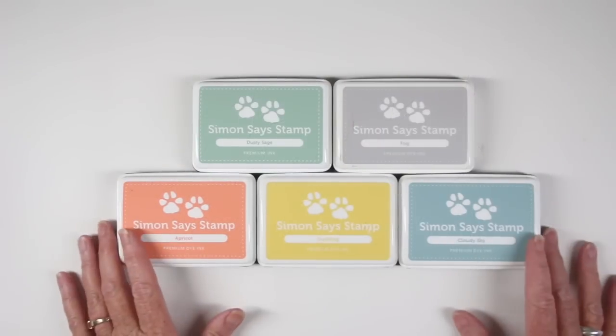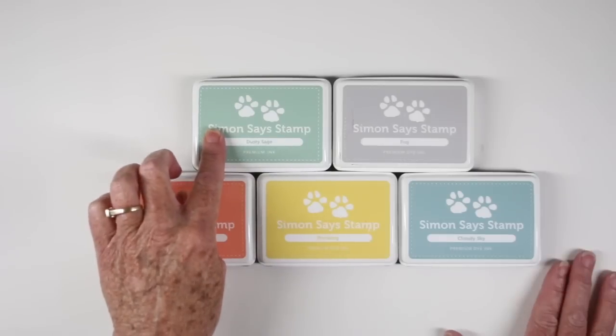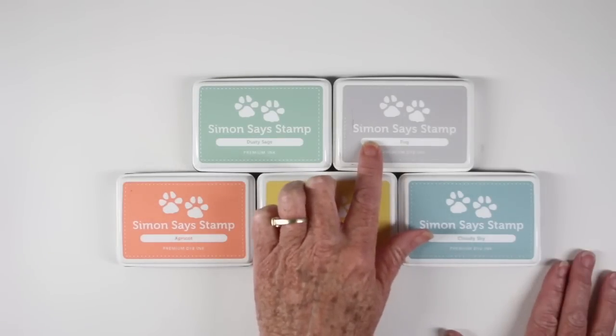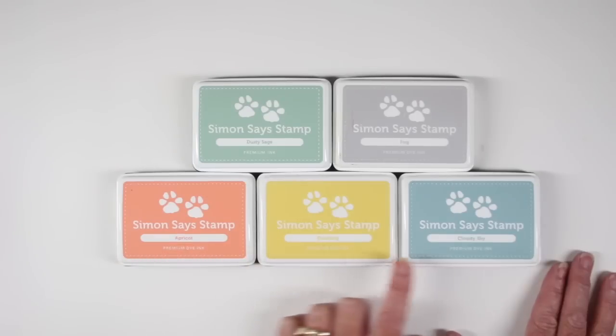I have five ink colors that I've chosen and they are all in a nice pastel range. So I have Dusty Sage, Fog, Apricot, Duckling, and Cloudy Sky.